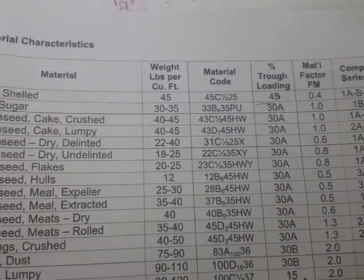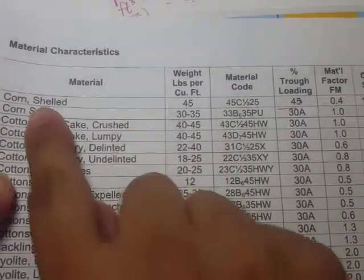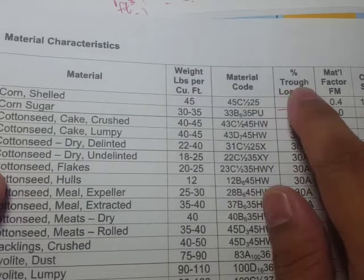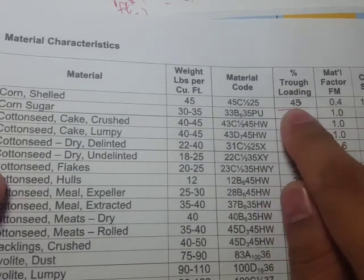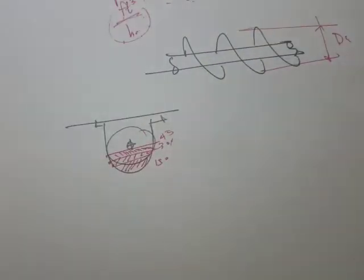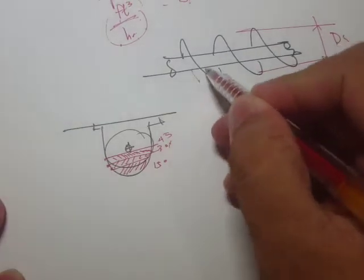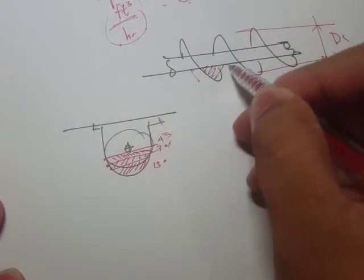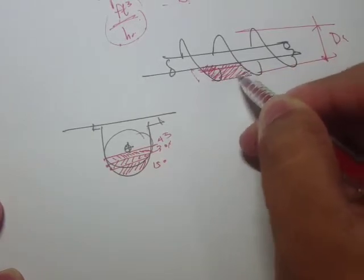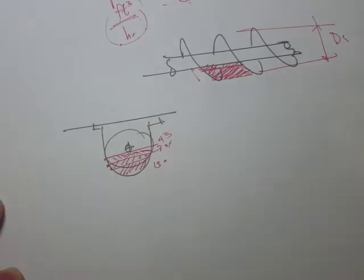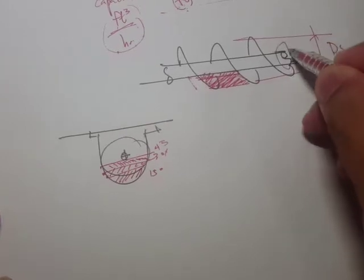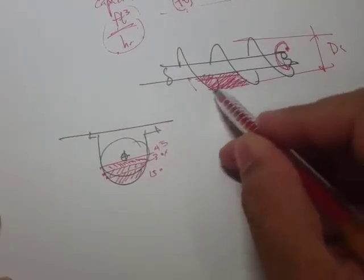Going back to the material characteristics table, for example corn shell it says the typical trough loading is 45 percent — meaning only 45 percent of the trough cross-section is occupied. If you draw it, the volume discharging per revolution is only that fractional area times the pitch, giving the volume per rotation.